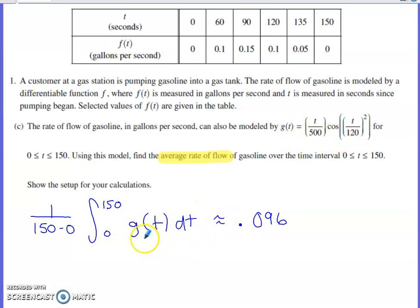So g(t) is all I have as my integrand. Got out my calculator, did that integral on the calculator, and I got 0.096.